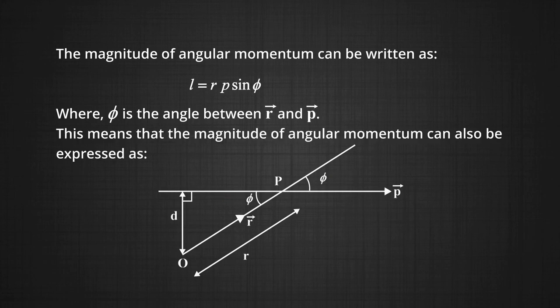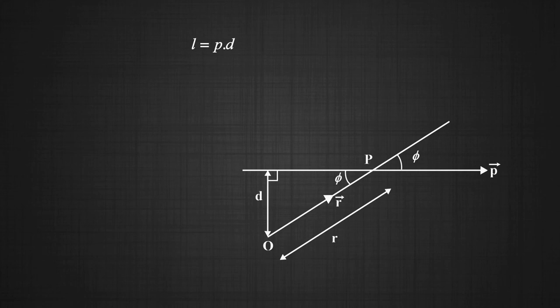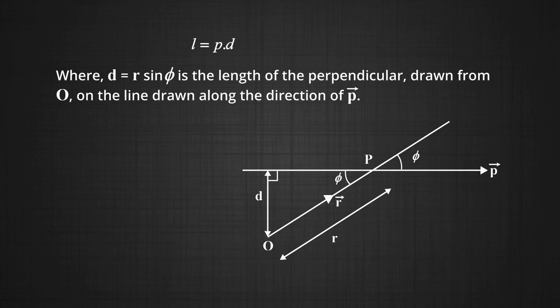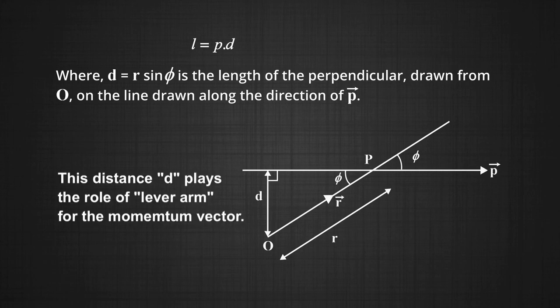The magnitude of angular momentum can also be written as L equals d into p, where d is the perpendicular distance from the line along which the particle moves and the point O. This distance, which also plays an important role in torque, is called the lever arm for the momentum vector.